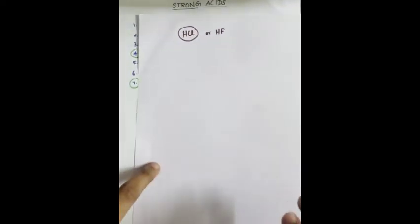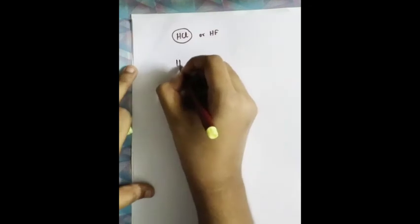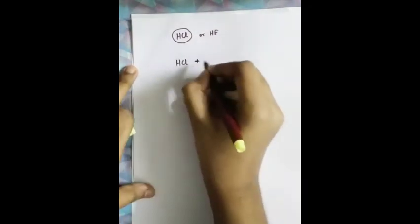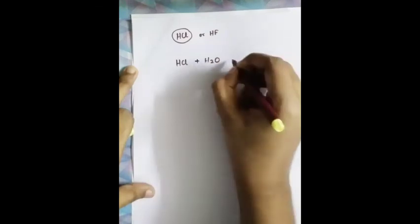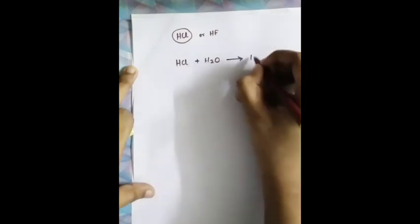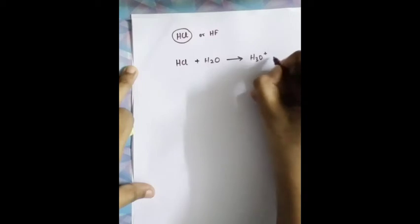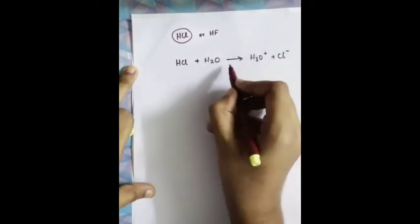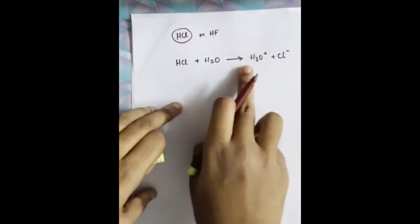Now what is the difference between strong acids and weak acids? A strong acid like HCl will 100% dissociate when dissolved in water.